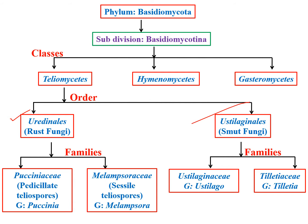I am not going to explain about the rust fungi here because in my previous lectures I already explained the important characteristics of rust fungi and the differences between rust and smut fungi, as well as the important characteristics of smut and bunt fungi. This smut fungi order is further divided into two families: Ustilaginaceae and Tilletiaceae, based on the promycelium characteristics.